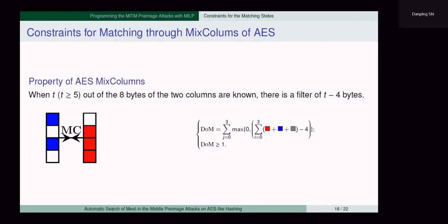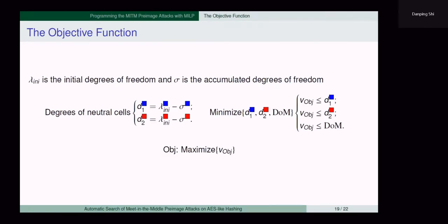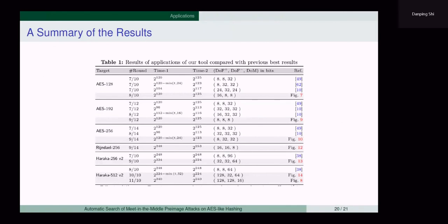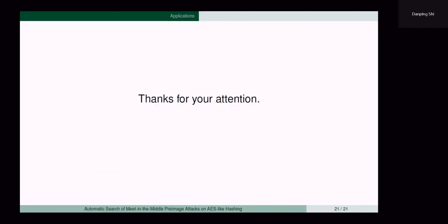Finally, in order to find a valid attack, there should be at least one byte that can be used to match. Apart from directly matching values of common words, any determined relations between words in the state at the matching point can be exploited to filter out mismatched computations. For AES MixColumn, if the number of known bytes in both chunks is larger than five, matching can be performed. To minimize the time complexity of the attack, the minimum of the size of neutral bytes and matching bytes should be maximized. Equipped with the presented tool, we evaluated the security of hash functions built on AES-like ciphers. For all targets, improved attacks are identified. In particular, our tool found the first pre-image attacks on 8-round AES-128 hash modes.